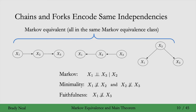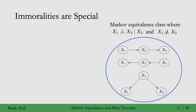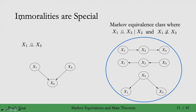Immoralities are a bit special. Unlike chains and forks, the basic immorality has X1 independent of X3 conditional on nothing, and X1 and X3 become dependent if we do condition on X2 — the reverse of chains and forks. This means immoralities are outside the Markov equivalence class for chains and forks; they're in their own Markov equivalence class. And unlike chains and forks, an immorality is alone in its Markov equivalence class.